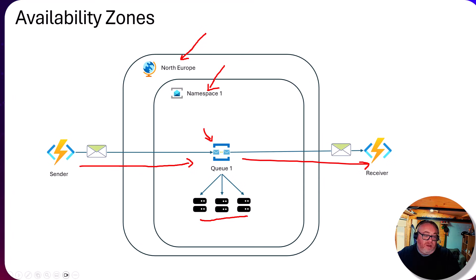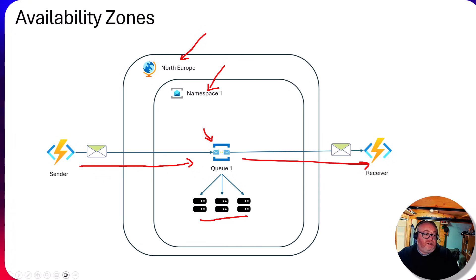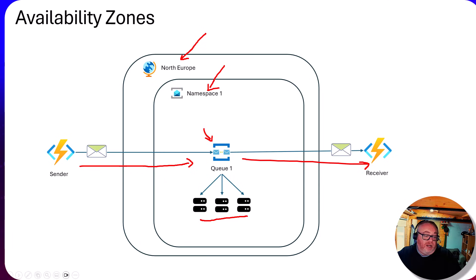This isn't even a premium feature that you have to pay extra for - it's just something Microsoft does by default. If I remember correctly, that means we get three nines of availability, and I'm still paying Service Bus Standard: a very small monthly charge and a per-message charge that scales nicely up and down, while getting this good level of resilience out of the box.